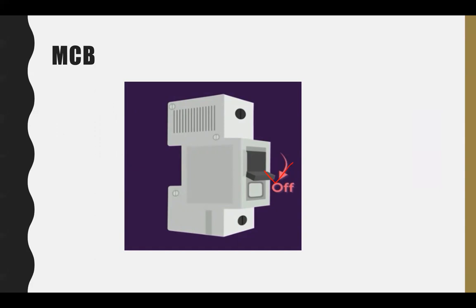So there will be no damage to the appliances. After that, when the flow is normal, you can manually switch it on, or in some devices with automatic systems, it will switch on automatically. That's why we can avoid short circuit and overload problems. This is all about our today's session.